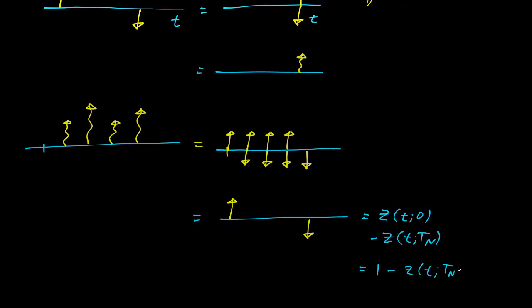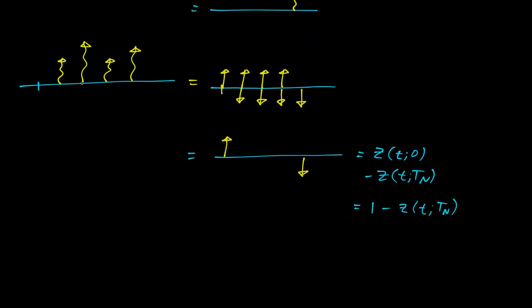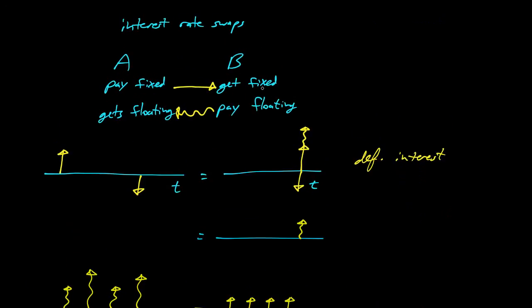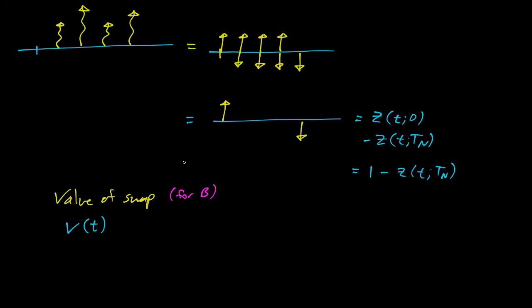Here's how we value a series of floating payments. Now what about valuing a swap? The value of the swap, V of t, we'll say from B's point of view. B is receiving the fixed payments, so we have a term: R_s is the fixed interest rate, tau is the time period between payments — normalizing the annual interest rate into the rate over the time period — then a sum over all payments i equals one to n.